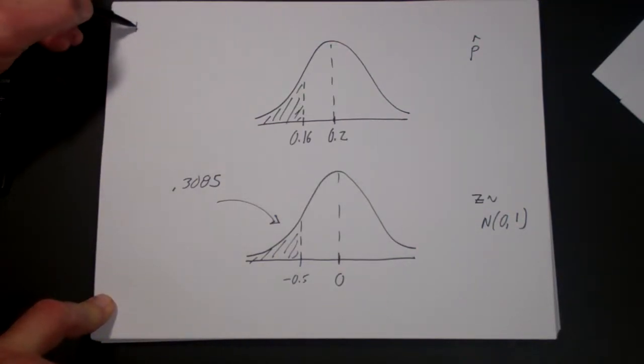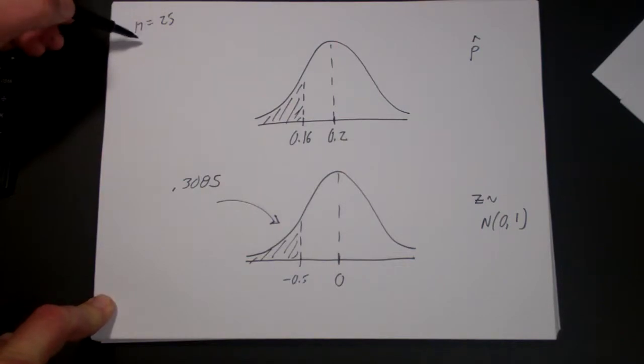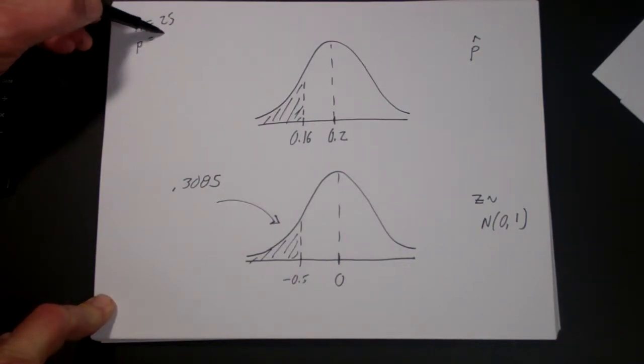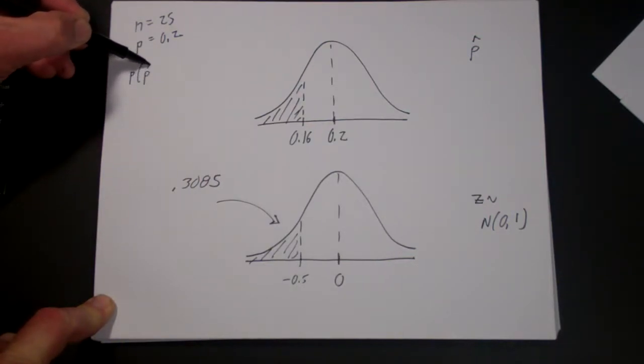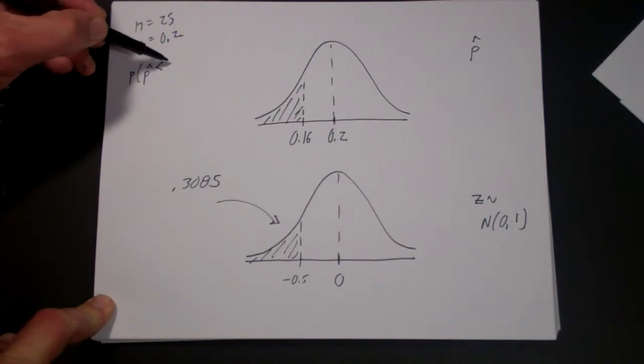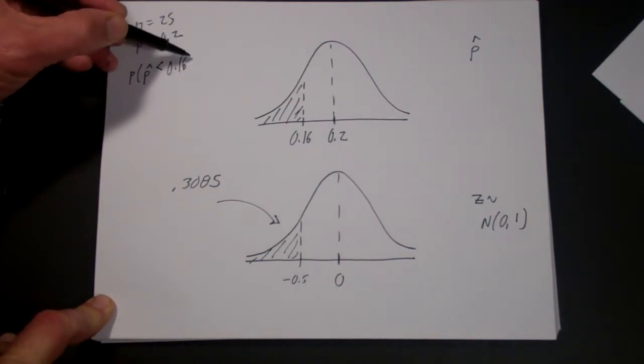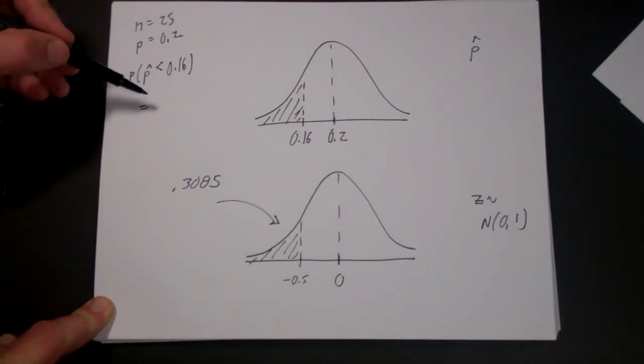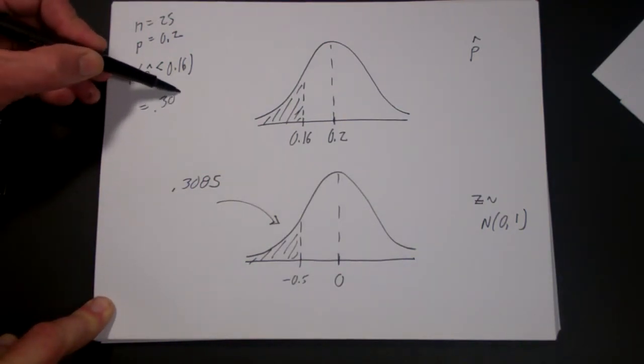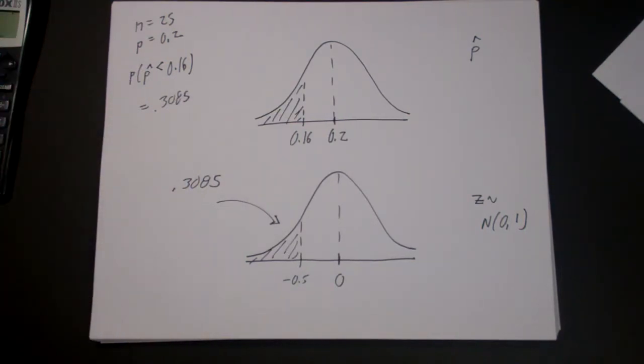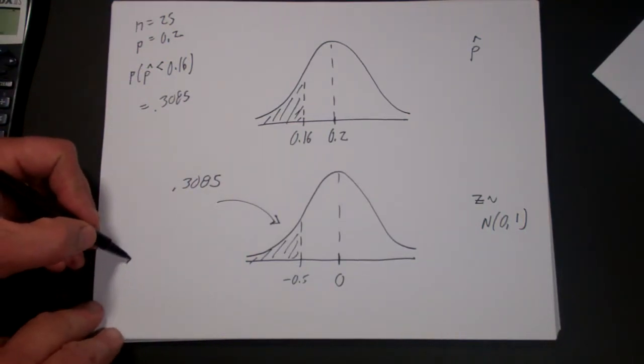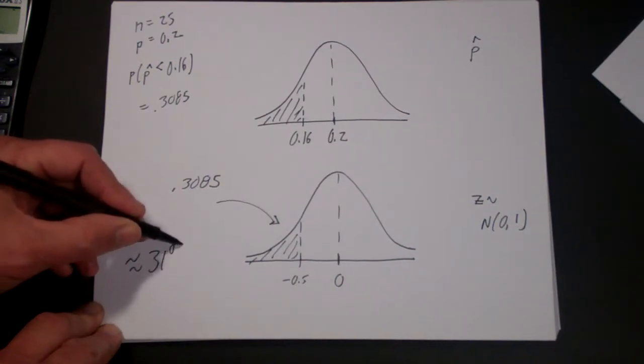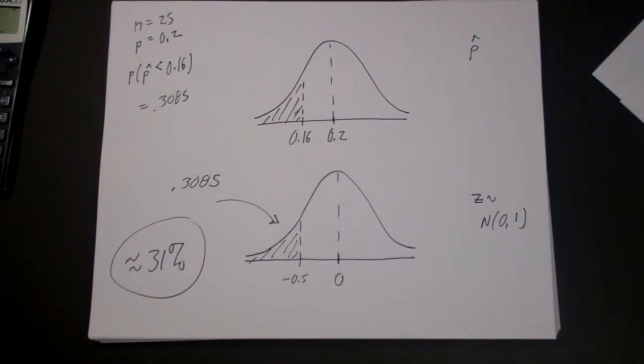So the way to interpret that is, if you have a sample size of 25 and a true p of 0.2, the probability that p hat will be less than 0.16—in other words, that you get fewer than four bad ones—will be 0.3085, or about 31%. And that's how you solve that problem.